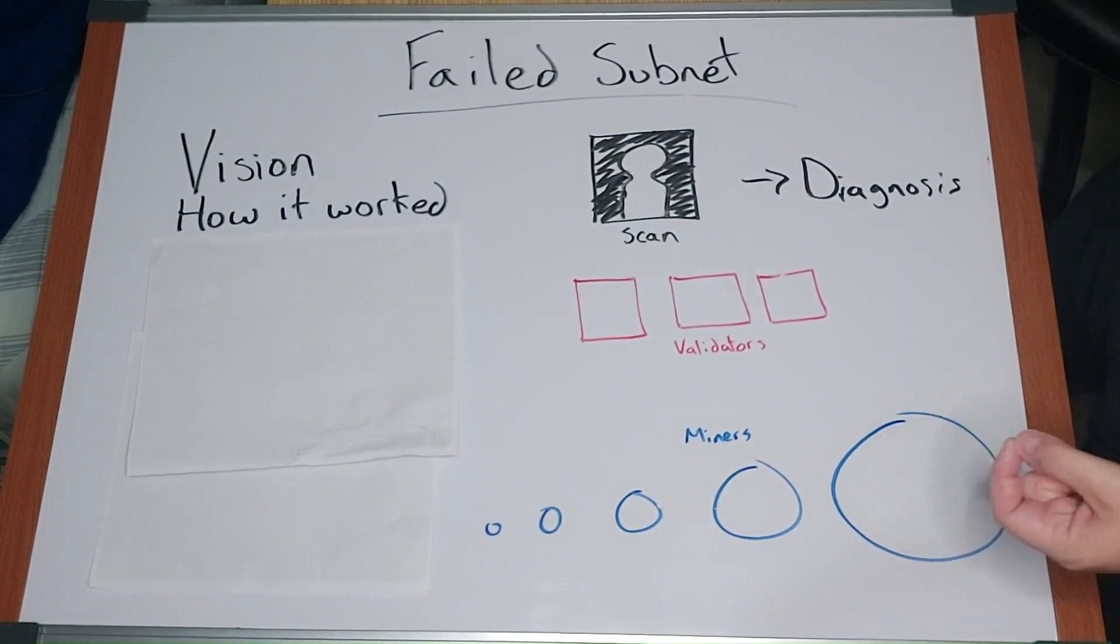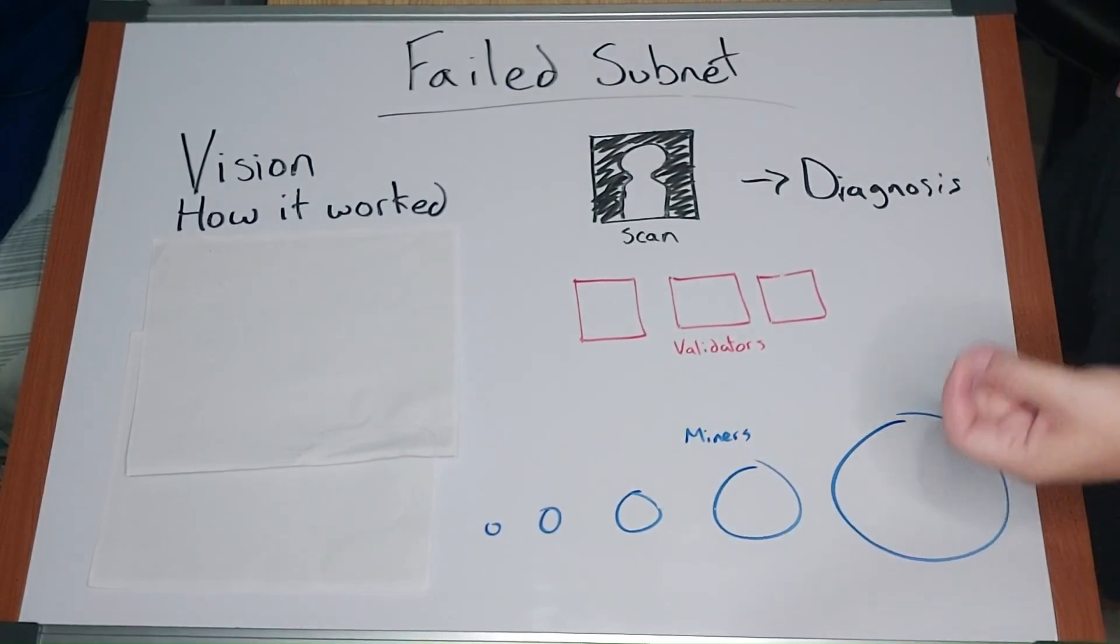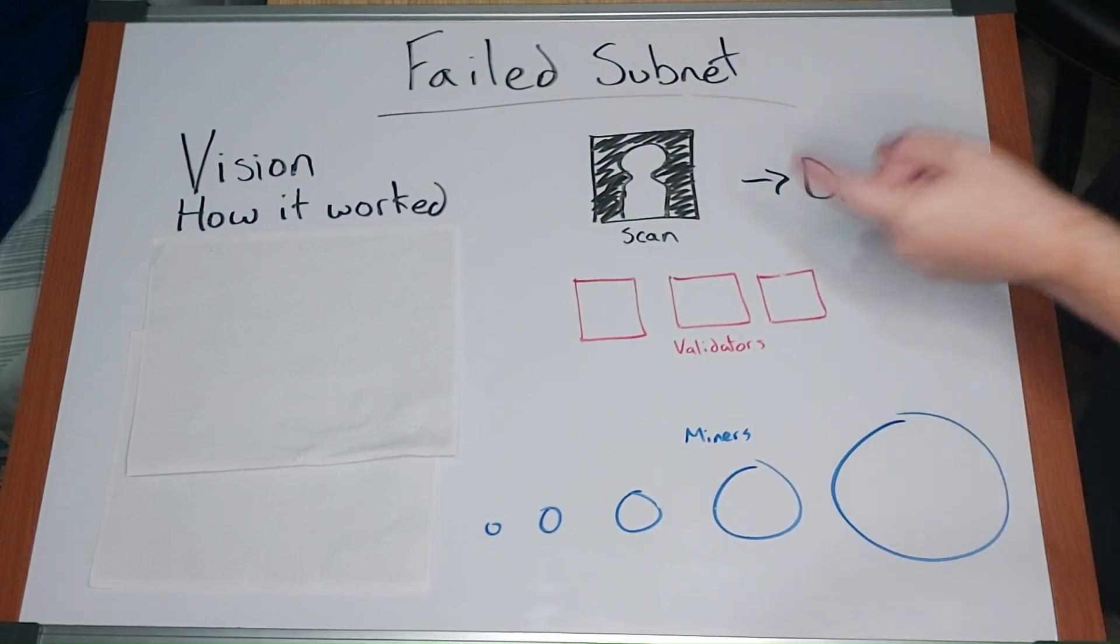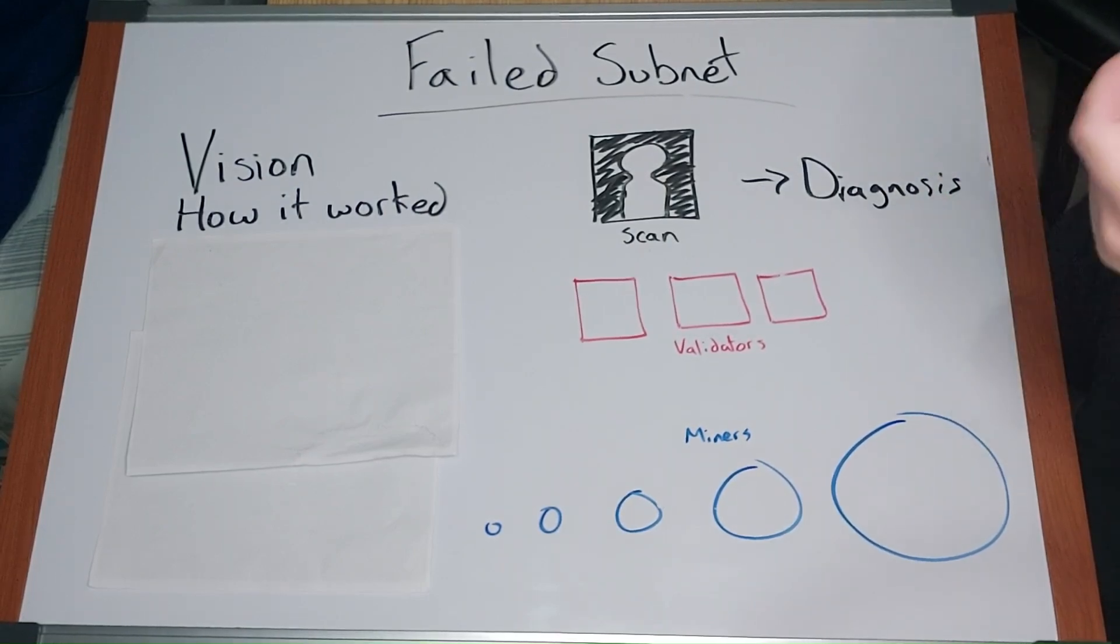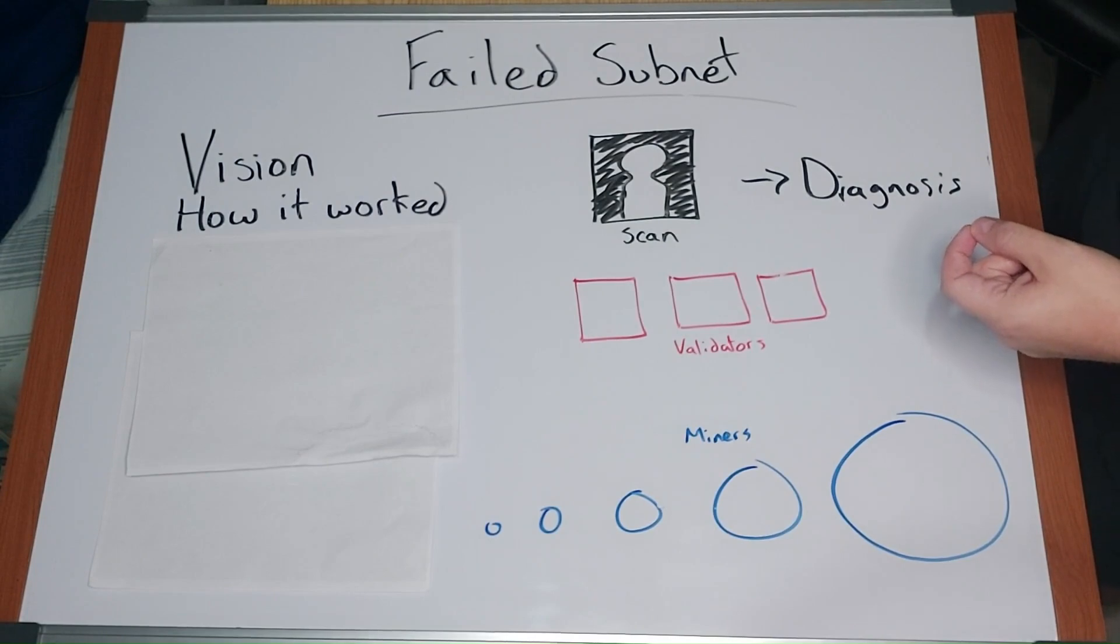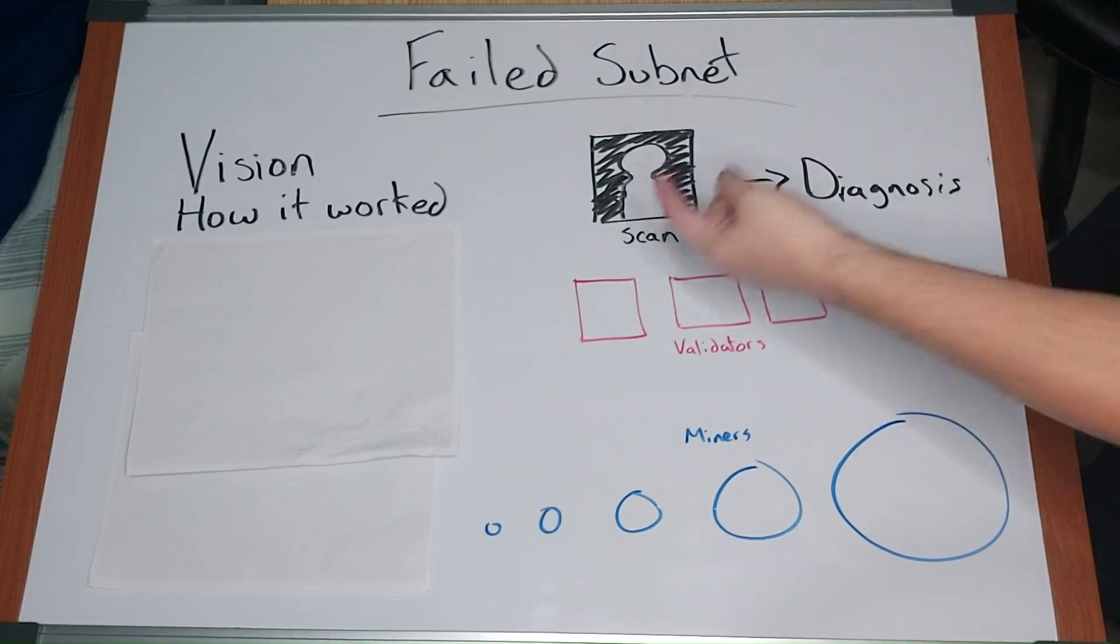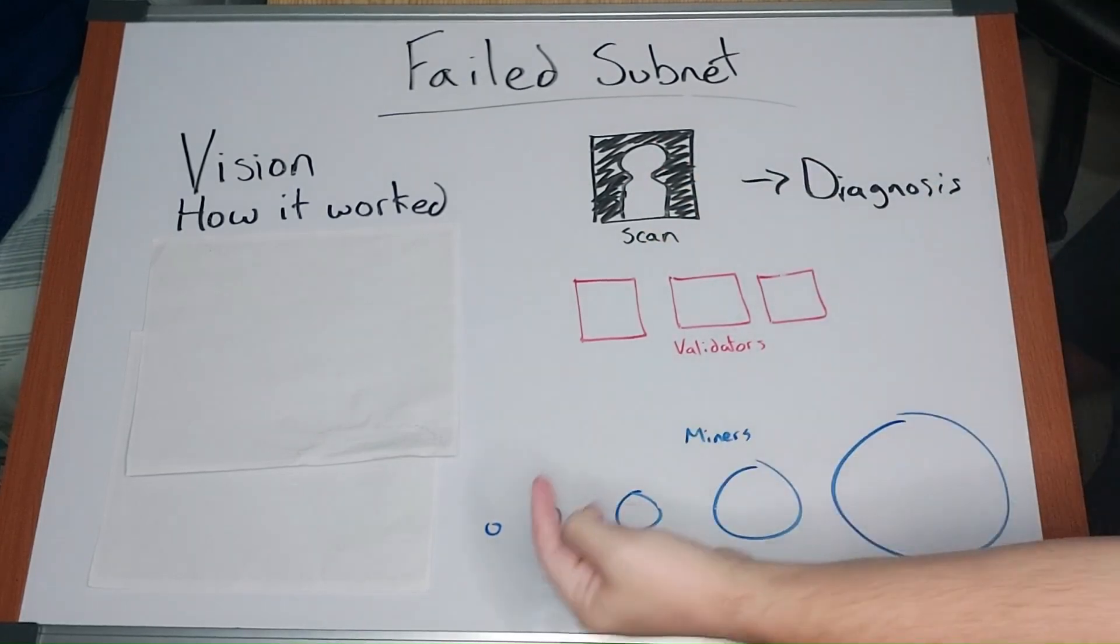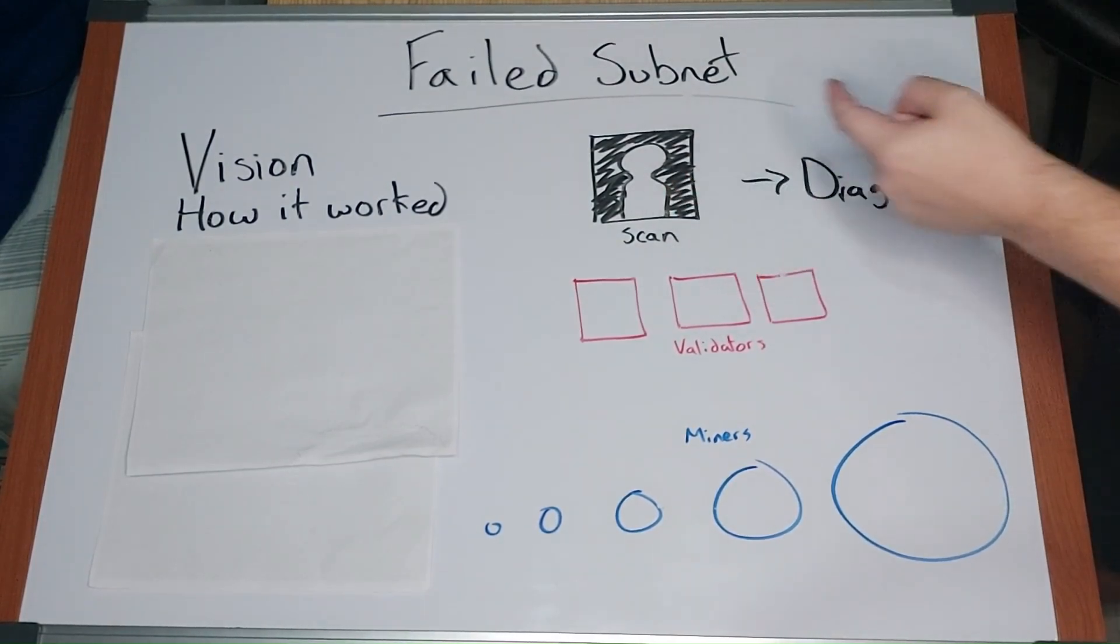Each miner was training their own individual model. The models were public in that as long as you had the link, you could download the model. Validators had access to that. So validators would download the models that were being trained by the miners and then run it against a private data set of image to diagnosis. They then rank ordered the miners based on how well they did against that private data set.